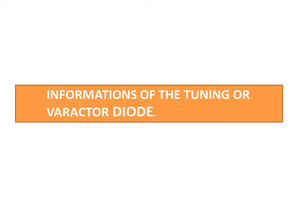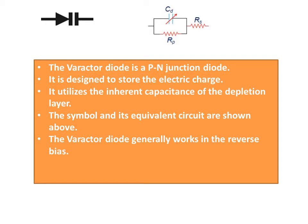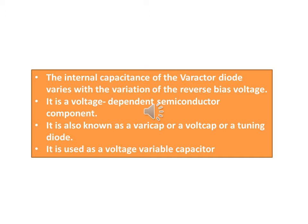The Varactor Diode, also known as the Tuning Diode, is a PN junction diode designed to store electric charge. It utilizes the inherent capacitance of the depletion layer. The symbol and its equivalent circuits are shown above. The Varactor Diode generally works in reverse bias, and its internal capacitance varies with the variation of the reverse bias voltage. It is a voltage-dependent semiconductor component, also known as a Varicap, Volt-Cap, or Tuning Diode, and is used as a voltage variable capacitor.